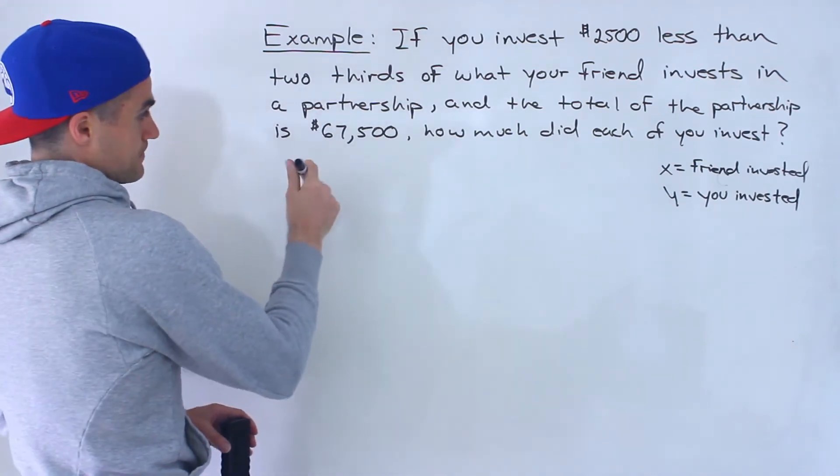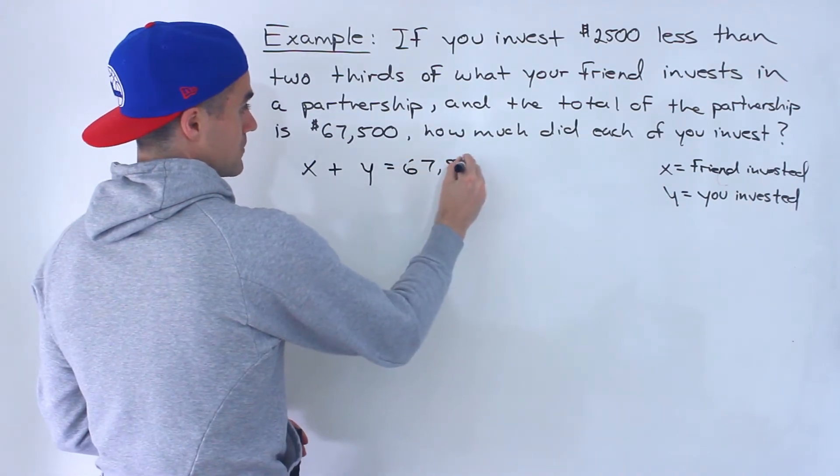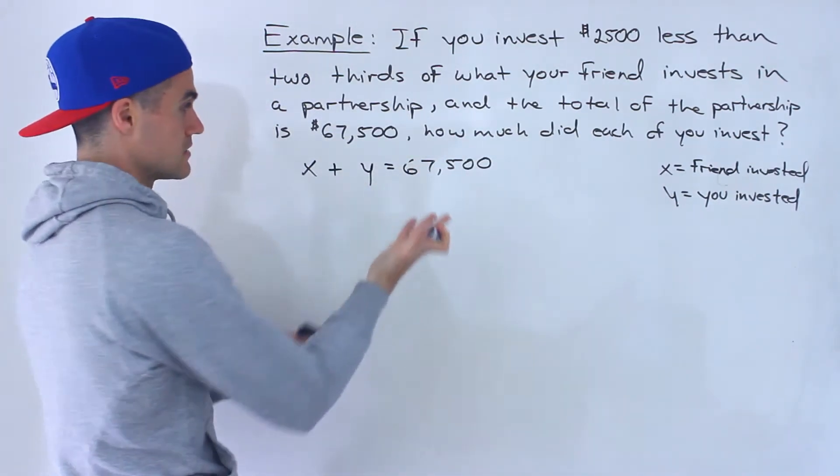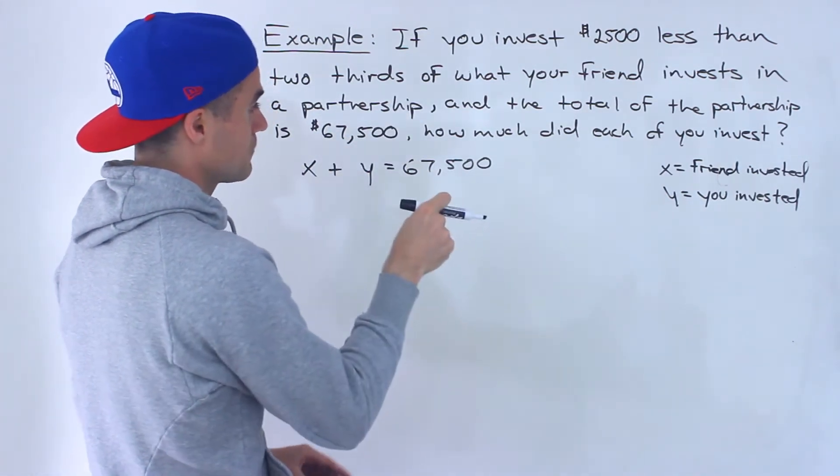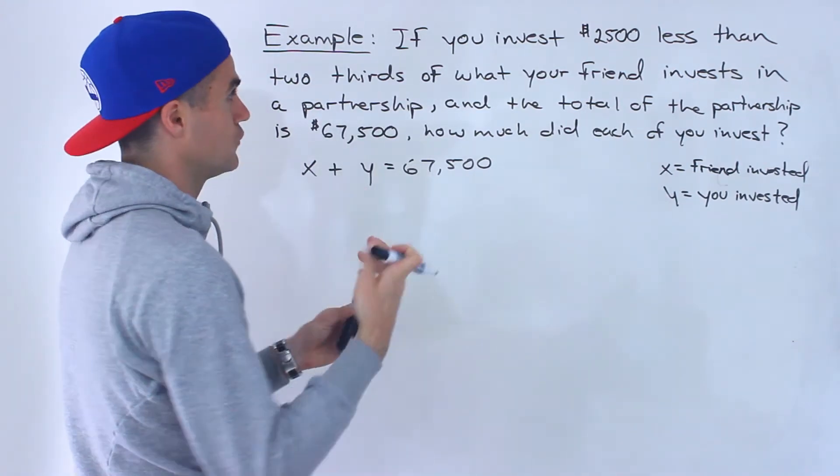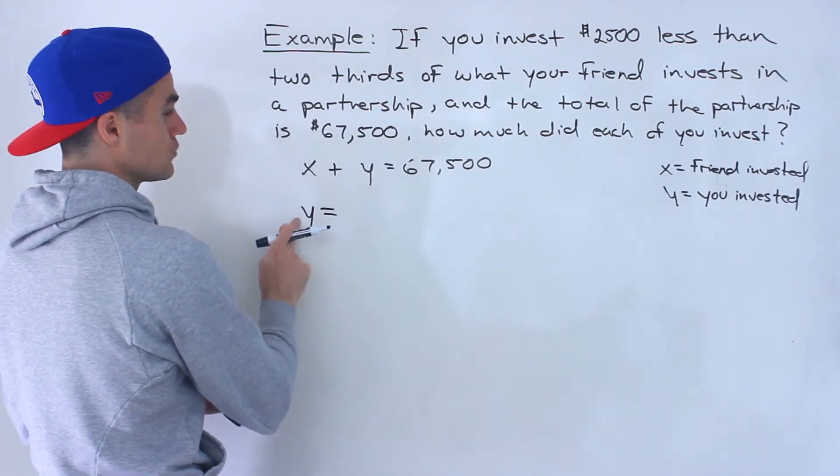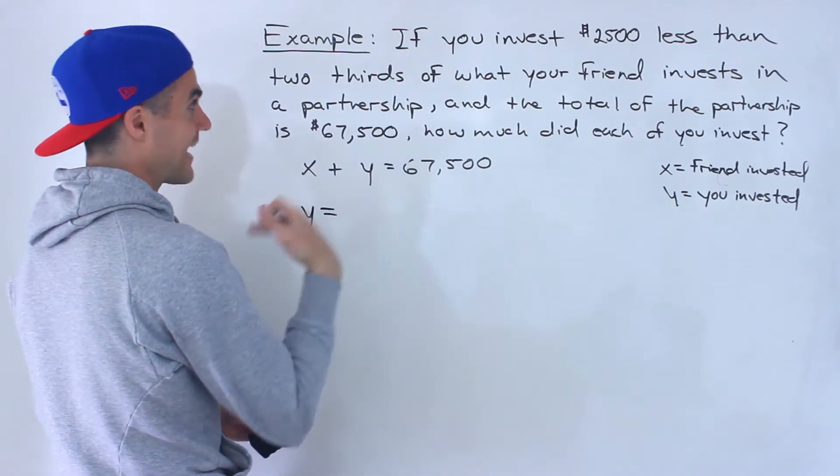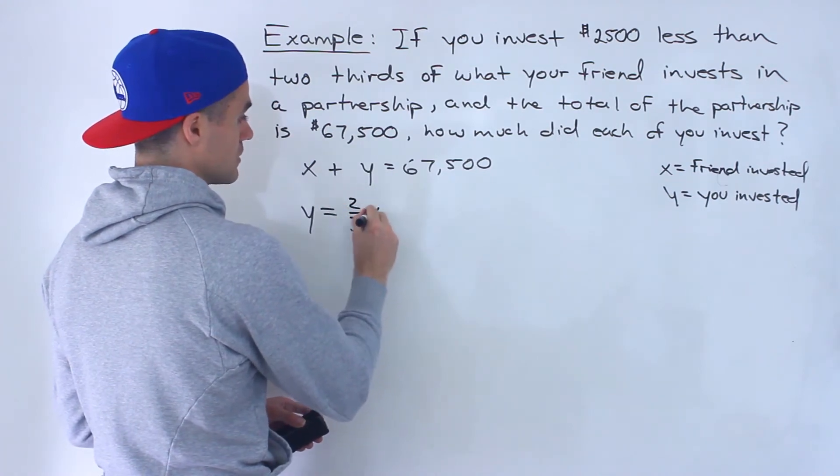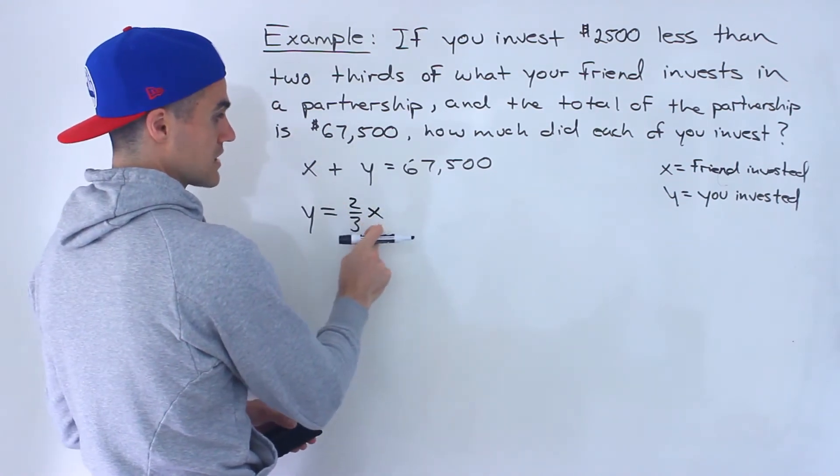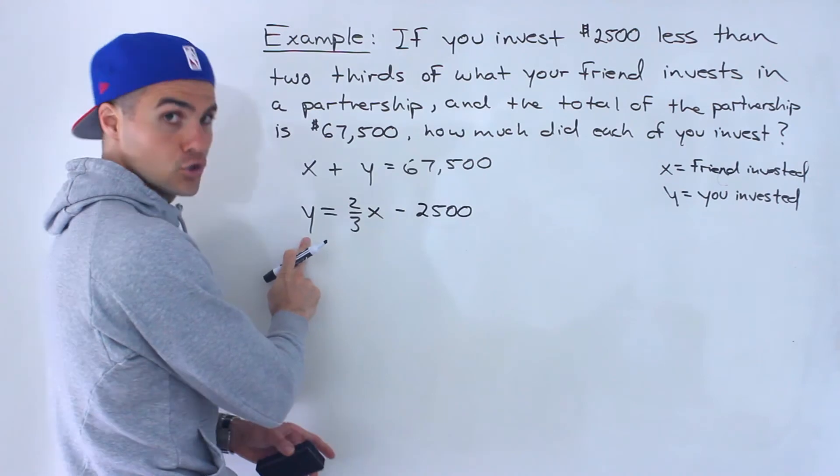Notice in this case the total of the partnership is $67,500. So that means the sum of what both of you invest has to equal $67,500. And then notice in the first sentence we're also given information where we can relate the amount both of you invest. So you invested and how much you invested is y. You invest $2,500 less than two-thirds of what your friend invests. So if we take two-thirds of what your friend invests, two-thirds times what your friend invests, and then subtract $2,500 from that, we would get what you invested.